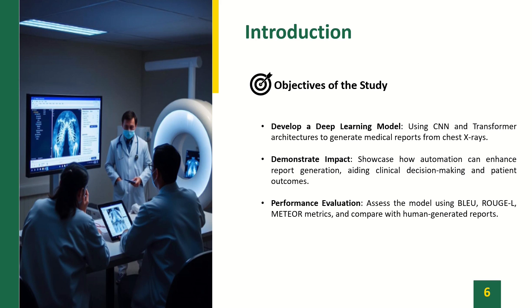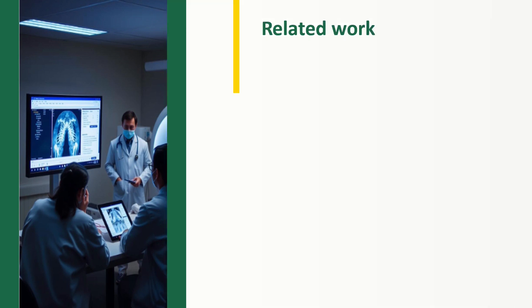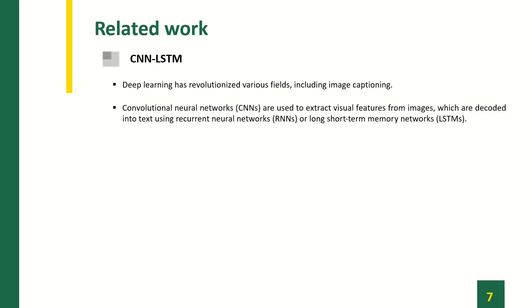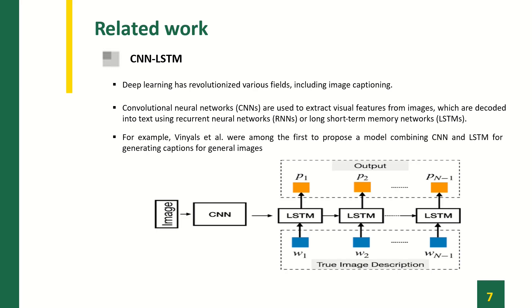Performance evaluation assesses the model using BLEU, ROUGE-L, and METEOR metrics, comparing with human-generated reports. Different approaches have been suggested using advancements in computer vision and natural language processing. For CNN-LSTM-based approaches, deep learning has revolutionized various fields including image captioning. Convolutional neural networks (CNNs) are used to extract visual features from images, which are then decoded into text using recurrent neural networks or long short-term memory networks (LSTMs). For example, Vinyals et al. were among the first to propose a model combining CNN and LSTM for generating captions for general images.